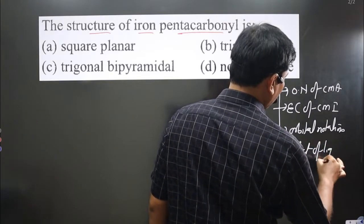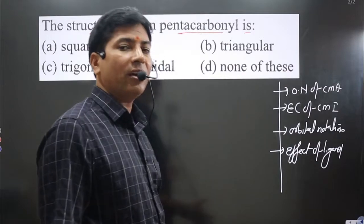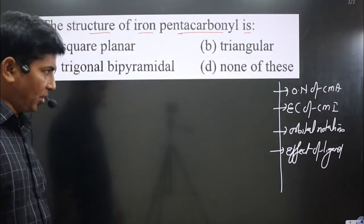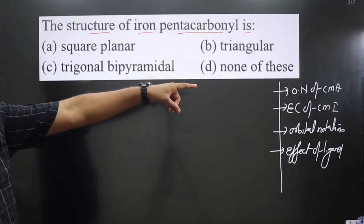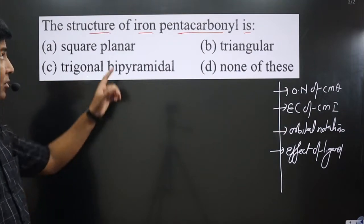We need to consider whether we have a strong field ligand or weak field ligand. Based on that, we do the pairing or non-pairing of electrons. First, we calculate the oxidation number of the central metal atom.